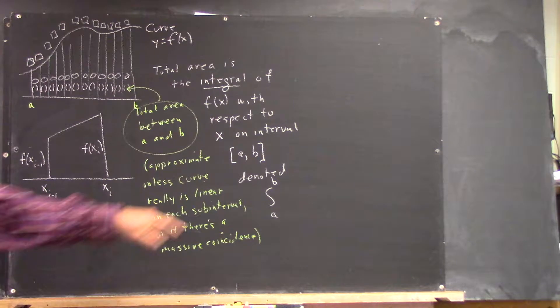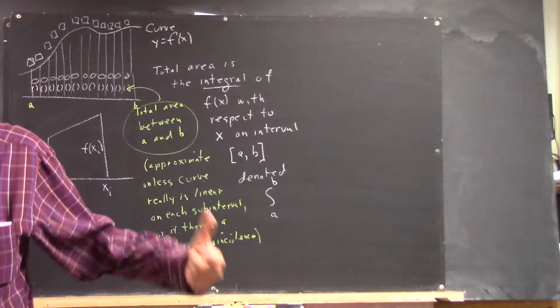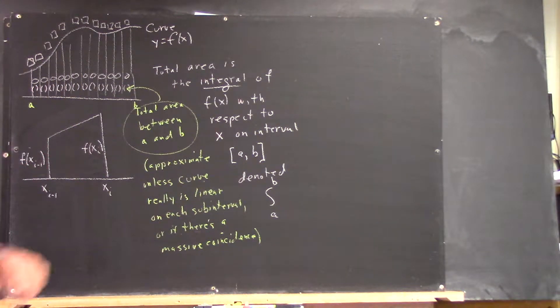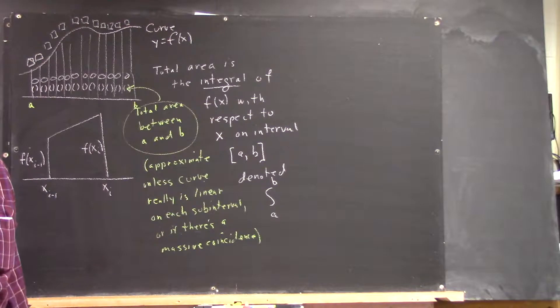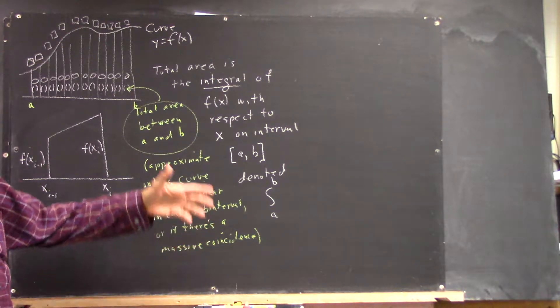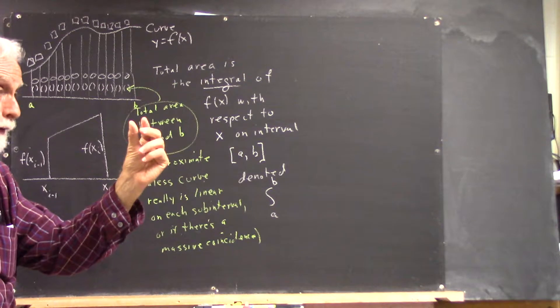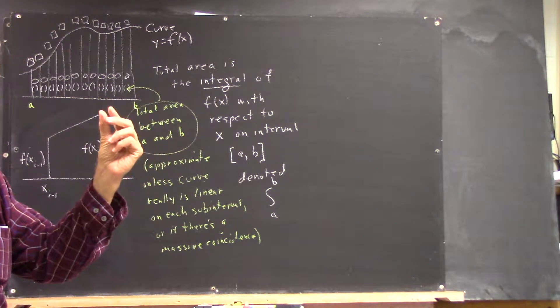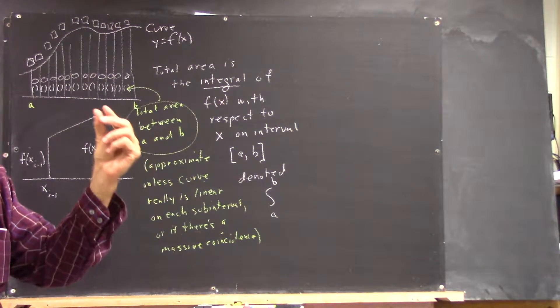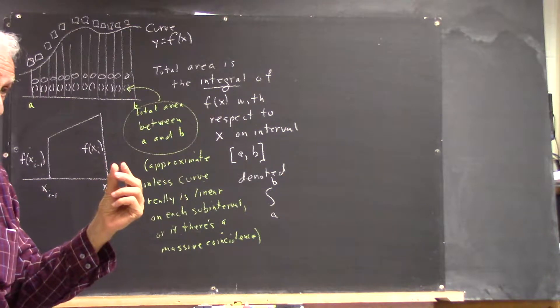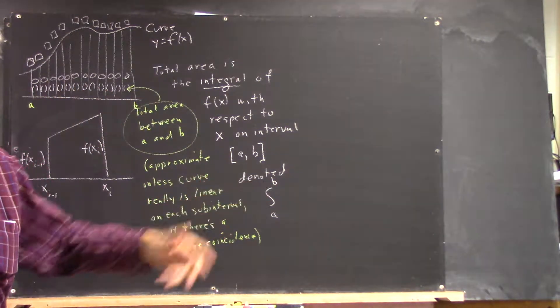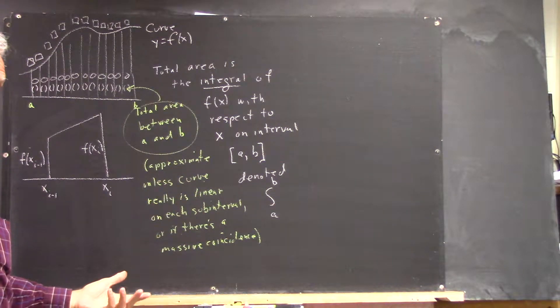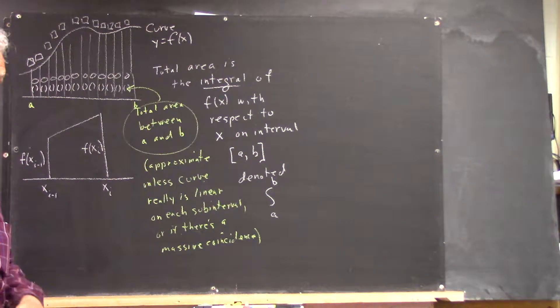Denoted by this sign. Now, what are you doing when you do this area? You're doing a sum of all the little areas. An integral is just a limit of what we do here as the width of your subintervals approaches zero. It's just a limit of what you've done here. We're not going to develop that. I'm just telling you, you'll see that when you take calculus.